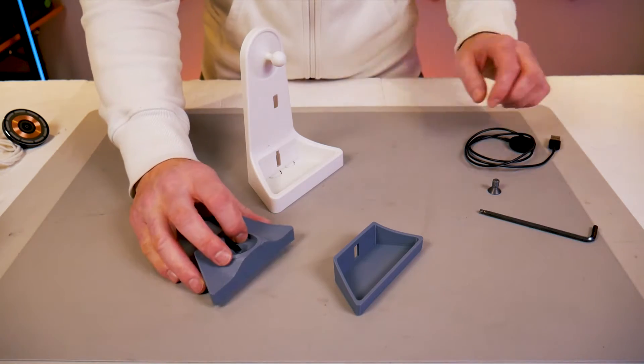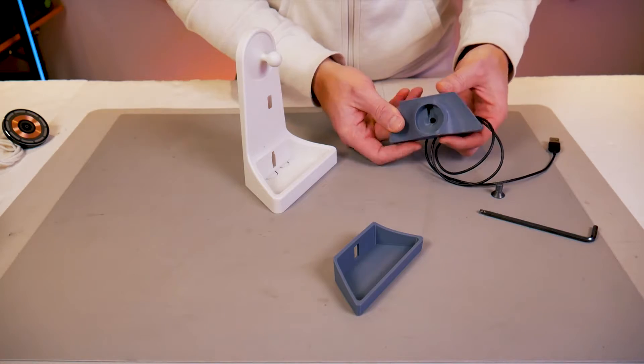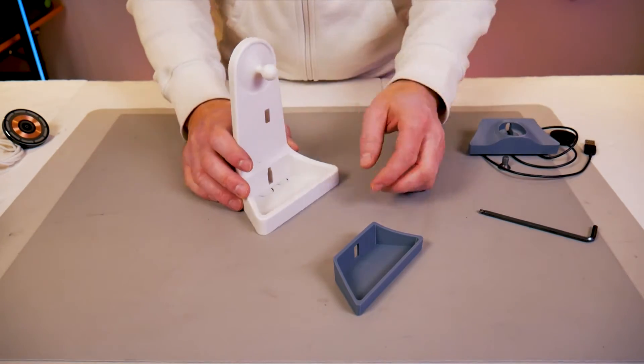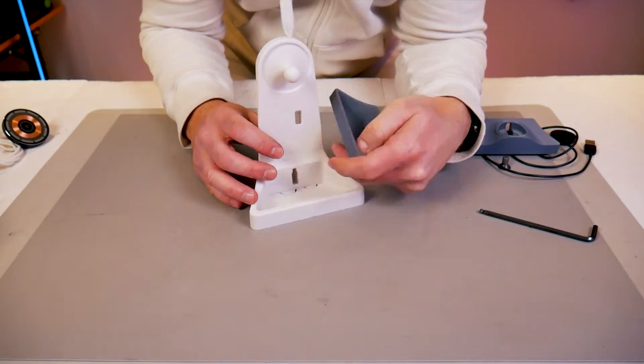And then I've got two printed pieces here that will fit into the bottom of the main stand body. This one here is for a Samsung Galaxy Watch charger. We'll talk about that in a minute but the first one is just this blank empty tray.